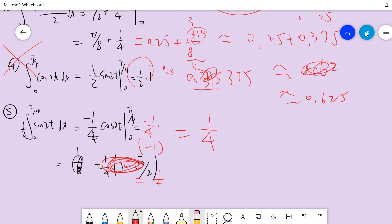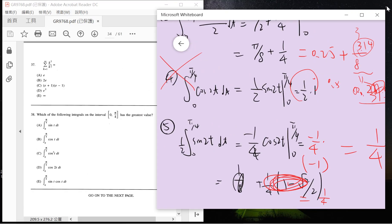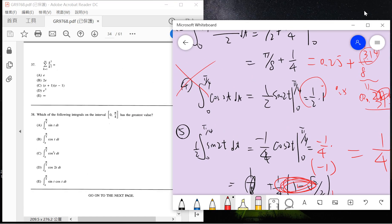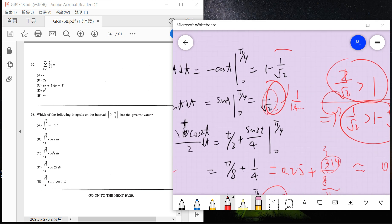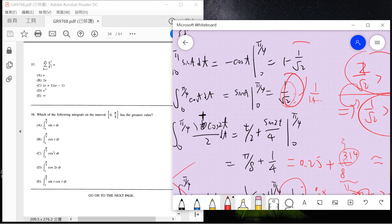So it looks like the second one, b, is the largest. So we choose b.